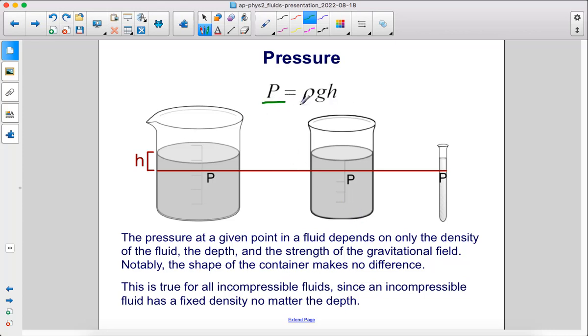So pressure equals rho GH. The pressure at this point in this beaker is going to be the same as the pressure at that same depth under the surface as this pressure here under this little column of fluid in this small vial.